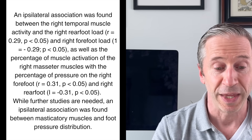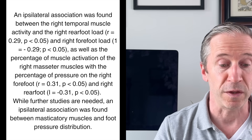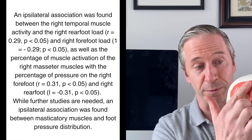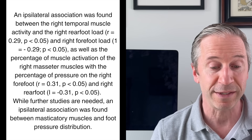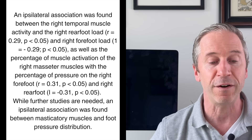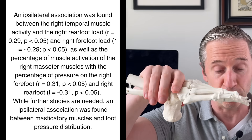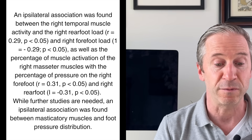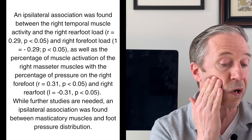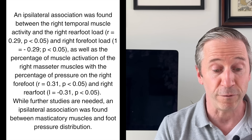What is the conclusion of the study? An ipsilateral — same side — association was found between the right temporal muscle, the temporalis. That's a big muscle; it pulls the jaw up. It's a chewing muscle, and the right rear foot load and right forefoot load. Basically the heel and the forefoot, as well as the percentage of muscle activation of the right masseter and the percentage of pressure on the right forefoot and right rear foot.